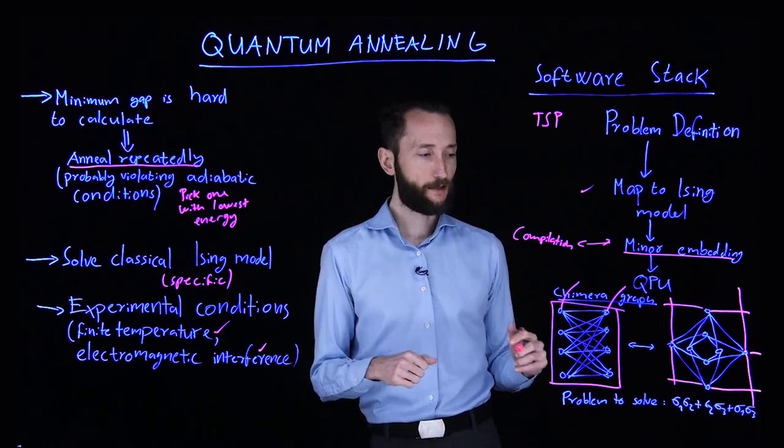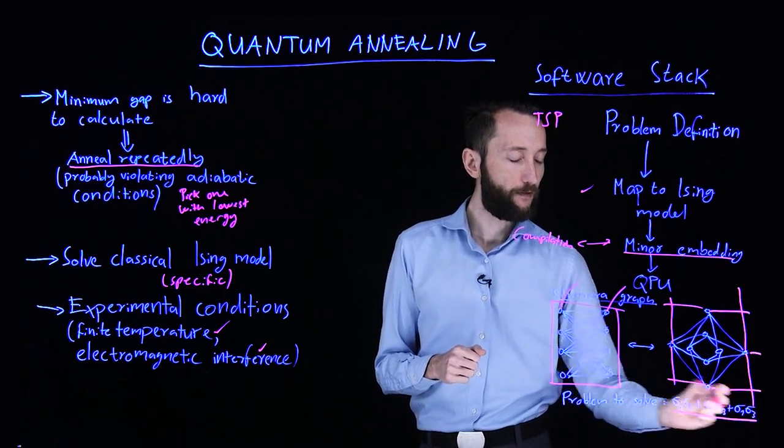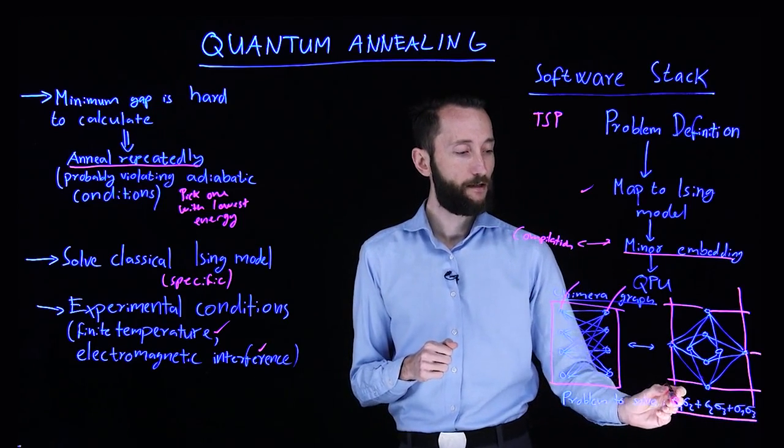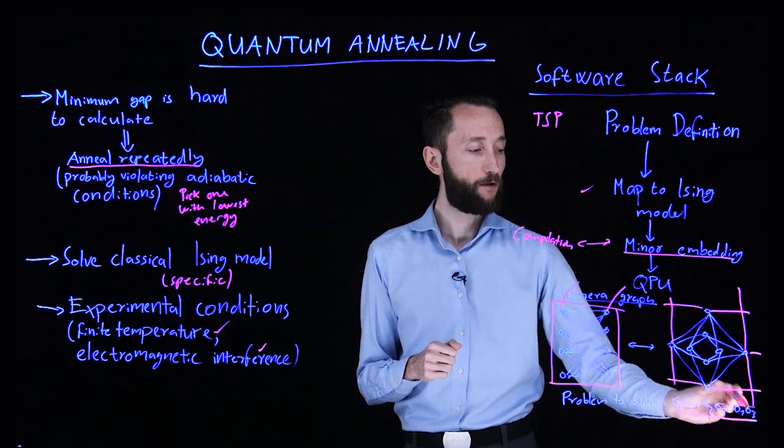So to be more specific, imagine that you have this problem. So you want to find the minimum energy configuration of sigma 1 times sigma 2 plus sigma 2 times sigma 3 plus sigma 1 times sigma 3.